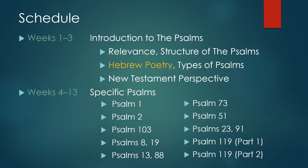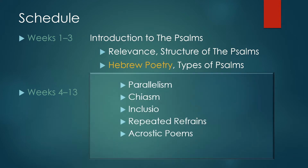We talked a little bit about the kind of poetry that we see in the Psalms. Parallelism is one of the key features of Hebrew poetry, and then others like chiasm, inclusios, repeated refrains, and also acrostics, which is one of the key features of Psalm 119 that we're studying today.